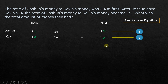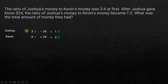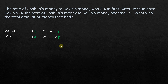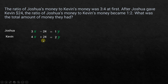We'll solve these using the elimination method. The goal is to make the y values equal so that when we subtract one equation from the other, y is eliminated and we're left with x. We have 1y in Equation 1 and 2y in Equation 2, so we multiply Equation 1 by 2 to get 2y on both sides.